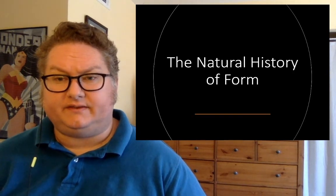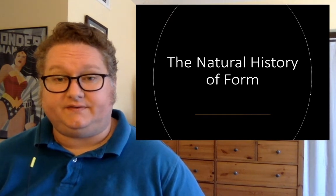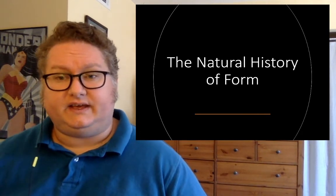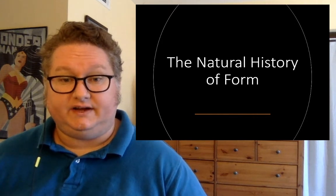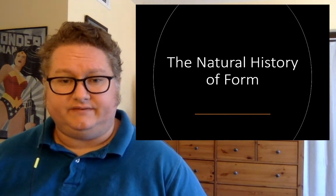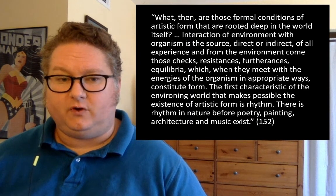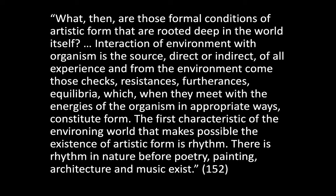This chapter is also about the natural history of form. Dewey starts to give us that picture partway through the chapter. He asks: what are those formal conditions of artistic form that are rooted deep in the world itself? Interaction of environment with organism is the source, direct or indirect, of all experience. From the environment come those checks, resistances, furtherances, and equilibria which, when they meet with the energies of the organism in appropriate ways, constitute form. The first characteristic of the environing world that makes possible the existence of artistic form is rhythm. There is rhythm in nature before poetry, painting, architecture, and music exist.